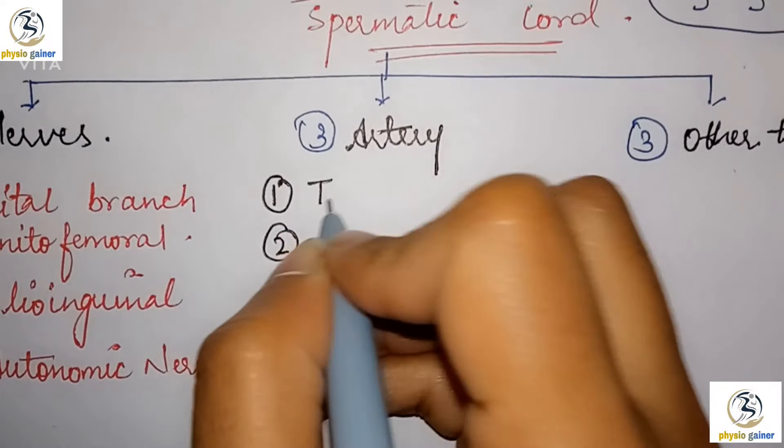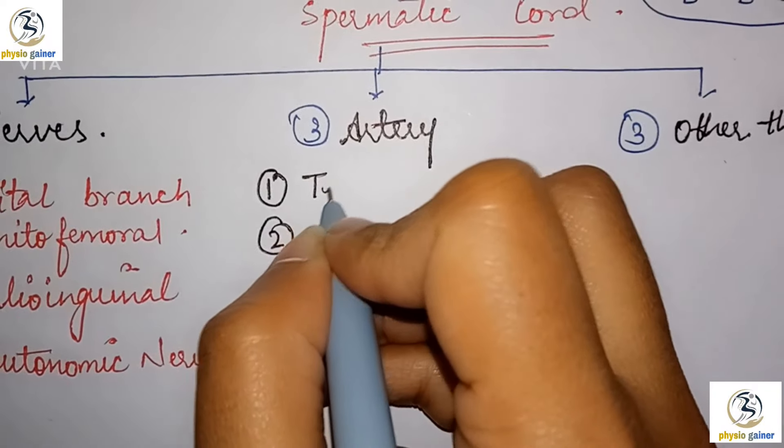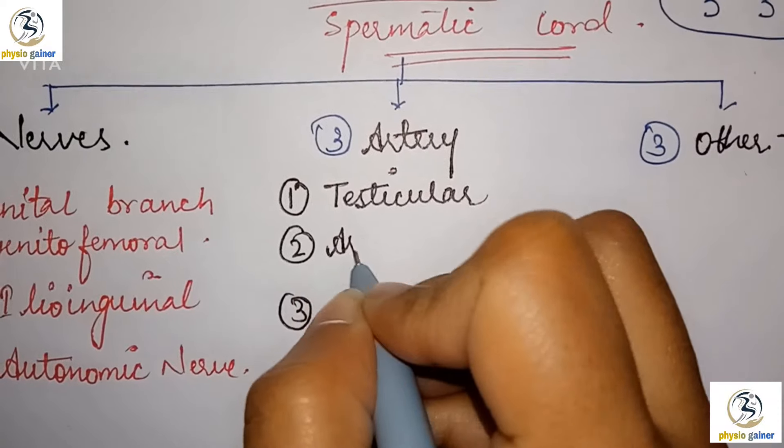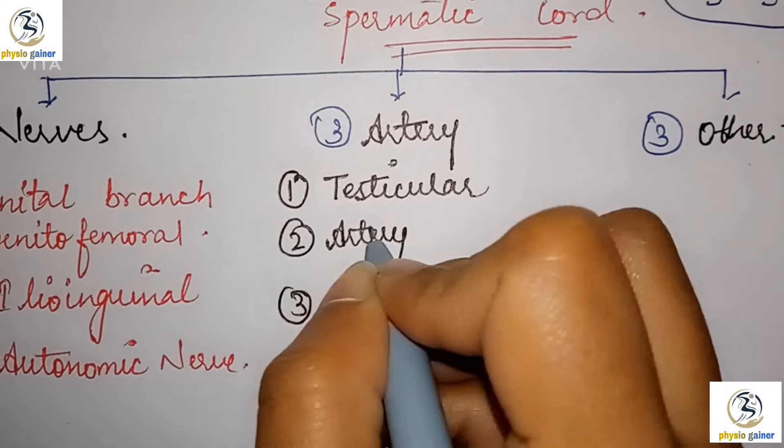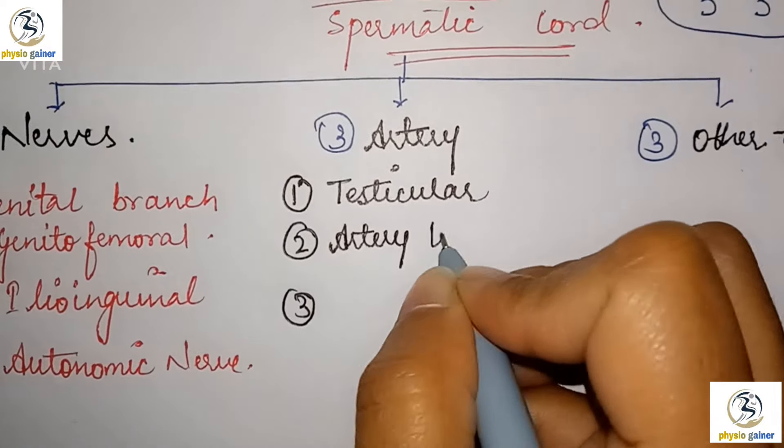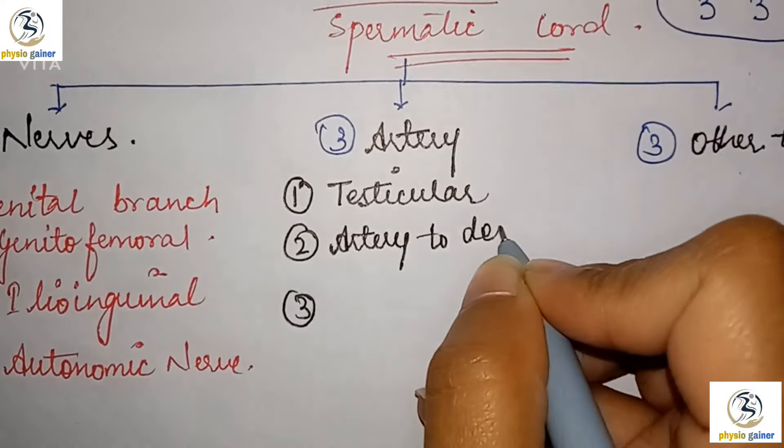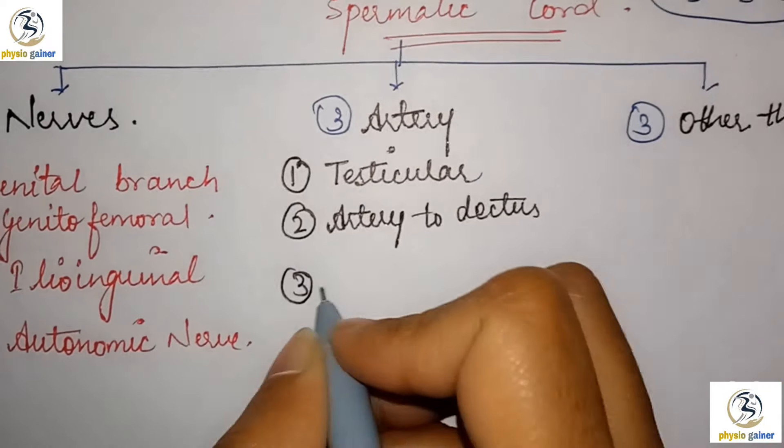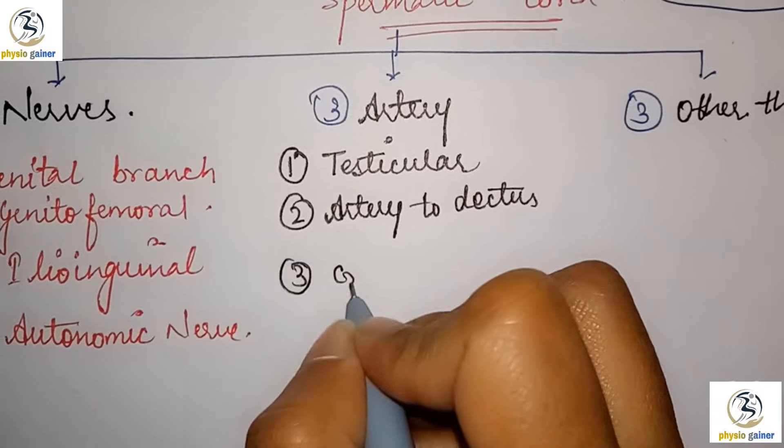The first is testicular artery. Artery to ductus. Artery to ductus. And the last is cremasteric artery.